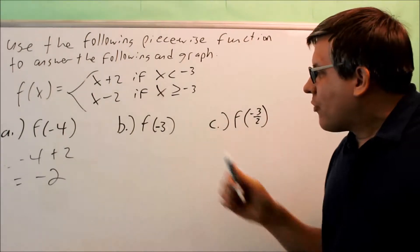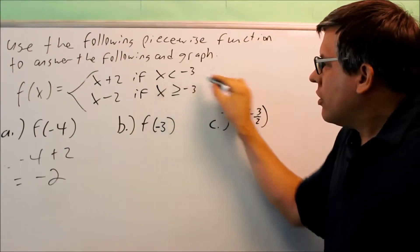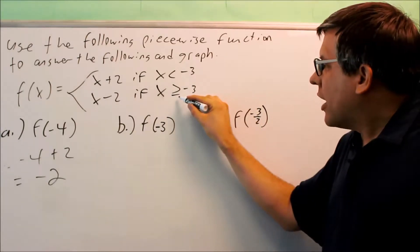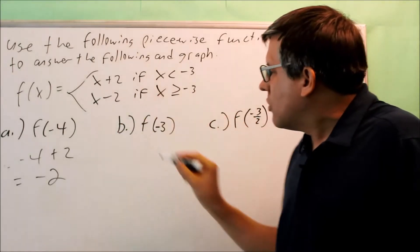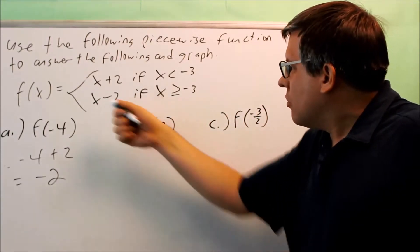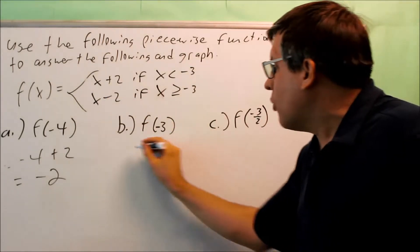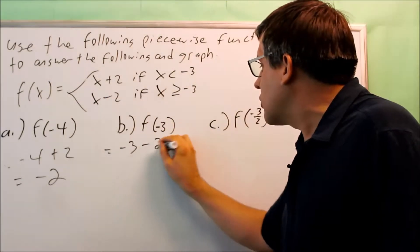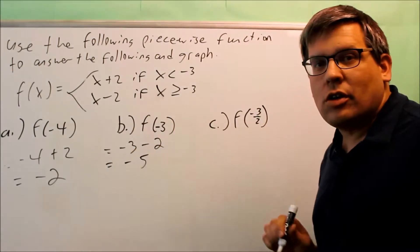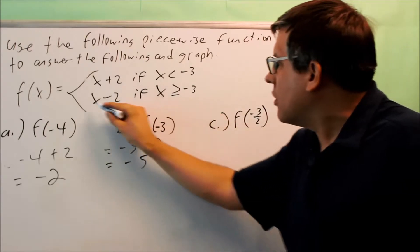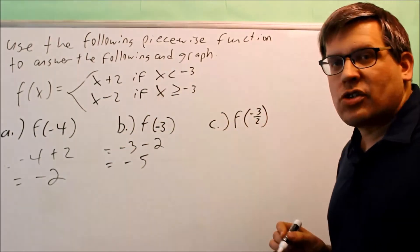Let's do the second one: f of negative 3. Negative 3 is only included in the second expression — we have an equal sign there, which means negative 3 is included for that condition. So I'm only allowed to use the second expression, x minus 2. Putting negative 3 in: negative 3 minus 2 gives negative 5. So when x is negative 3, the y value is negative 5.